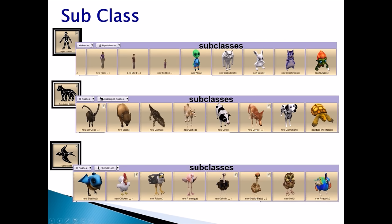Quadruped is a superclass. When we talk about the quadruped class, that means all these subclasses have four legs. We have goat, bison, cayman, camel, cow, coyote, dalmatian, desert tortoise as subclasses. When we talk about the flyer class, that means they have wings and they can fly. All of these subclasses have wings and they can fly.